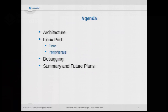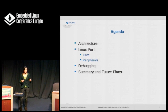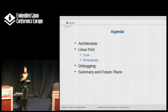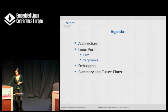So, at the beginning I'm going to introduce you to the architecture. Then I will move to the Linux port itself — first at the level of the core, so just the support of the core itself, and then the peripherals. Debugging is pretty important, especially when you are running multi-core, so I will show you our debugging methods too. And, of course, all the future plans for the port.